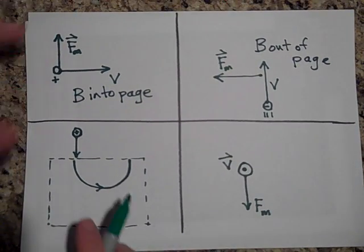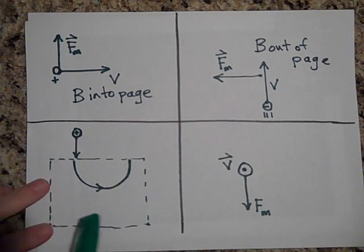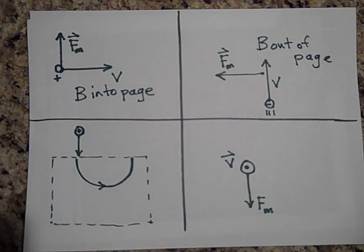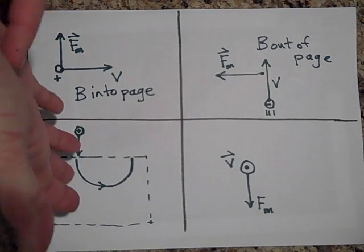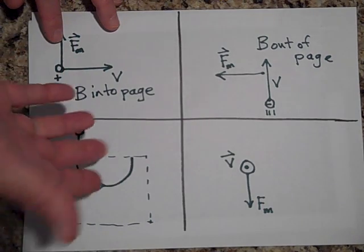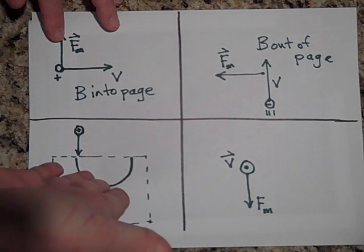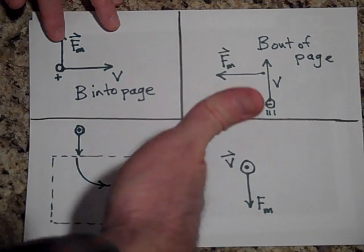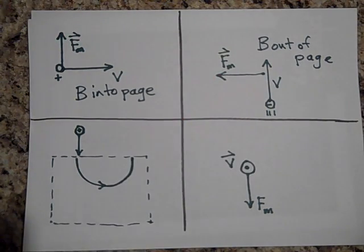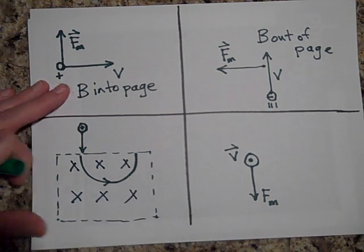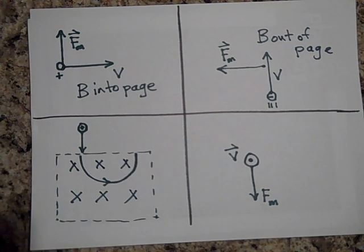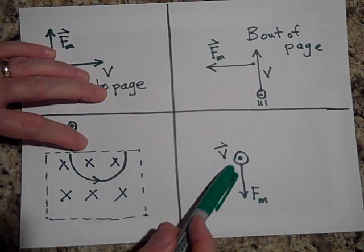Next: a positive charge enters a field and makes a semicircle. Which way is b? Using the right hand, thumb initially pointing in the direction of v. In order to get pushed to the right at first, the field has to be into the page — represented by x's, which are the feathers of arrows going away from you. So b is into the page.